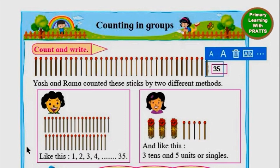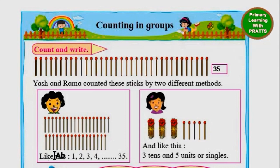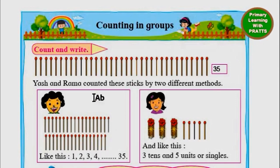Now let's see what they are saying. Let's count the sticks again. See how many there are — 35, like this: 1, 2, 3, 4. That's just how we counted here.